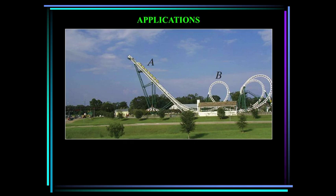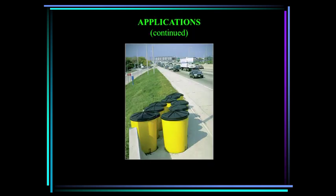First, some applications. Here's a roller coaster. It makes use of gravitational forces to assist the cars in reaching high speeds in the valley of the track. How can we design the track — for instance, the height or the radius of curvature — to control the forces experienced by the passengers? Crash barrels are often used along roadways in front of barriers for crash protection. The barrels absorb the car's kinetic energy by deforming. If we know the velocity of an oncoming car and the amount of energy that can be absorbed by each barrel, how can we design a crash cushion?